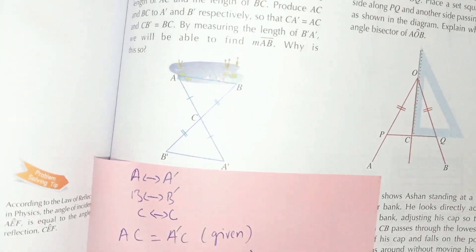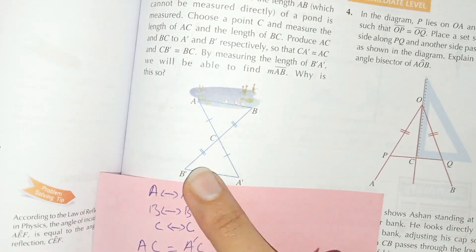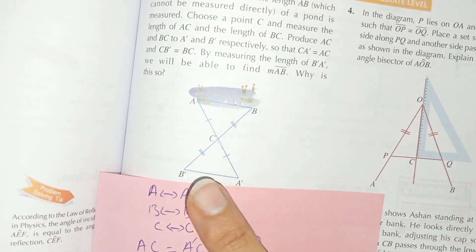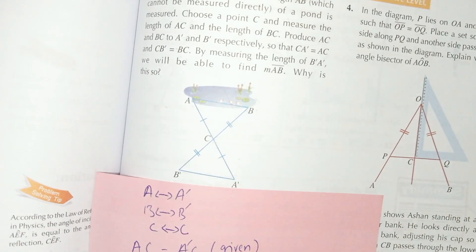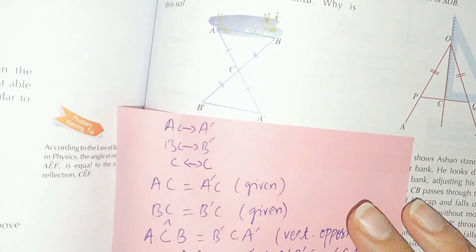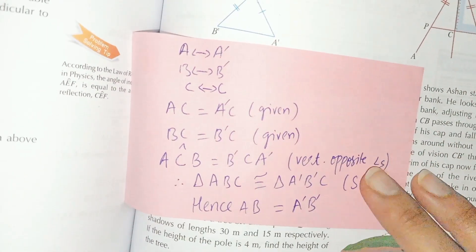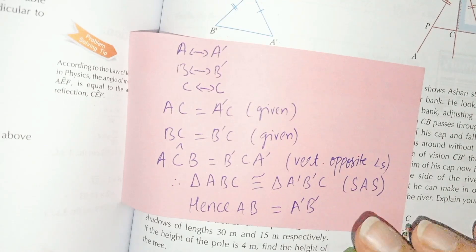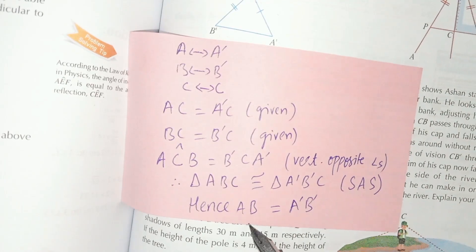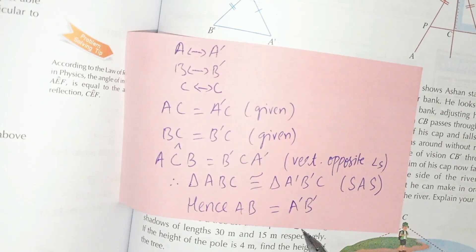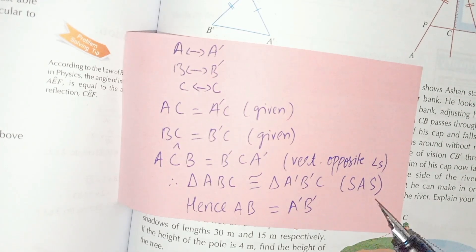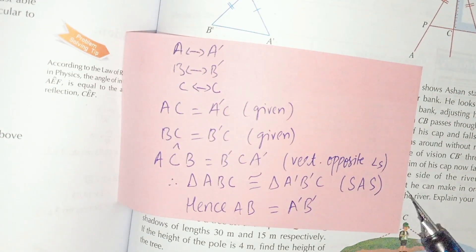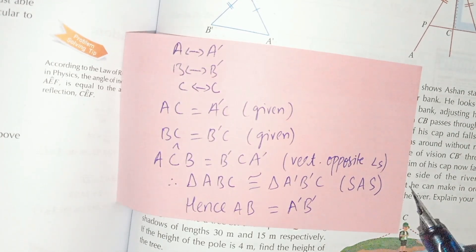So we cannot measure length AB directly, but when we measure A-dash B-dash it is equal to AB. We only need to prove that the triangles are similar and the sides are equal. Question number one is now done.